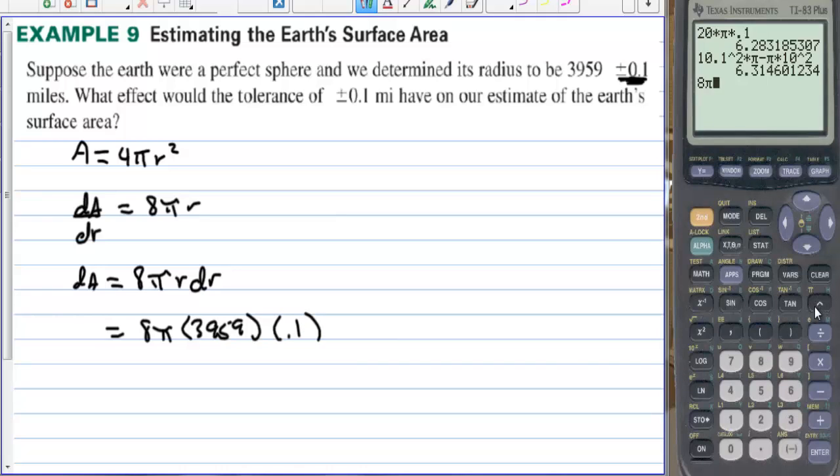We have 8 times pi times 3,959 and then times .1. This is equal to 9,950.052 square miles. So if we are off by .1 on what we think the radius could be then the surface area is going to be off by 9,950 square miles approximately.